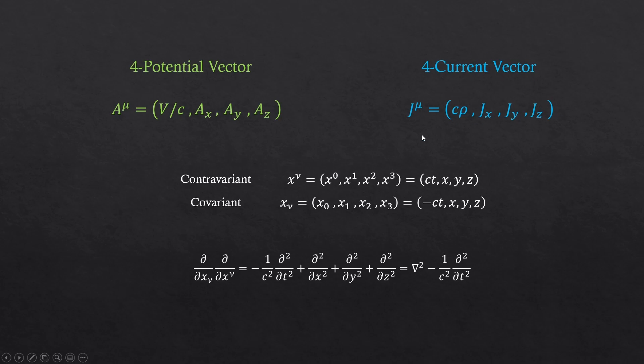This should look familiar if you have watched my previous video. And if you have watched my previous video, you should also be aware of this contravariant and covariant vectors and how we can turn them into derivatives. Covariant vector is just the first element sign being switched. So that's why the second order derivative is a Laplacian minus 1 over c squared d squared over dt squared.